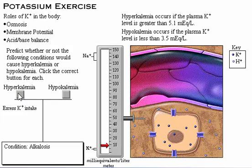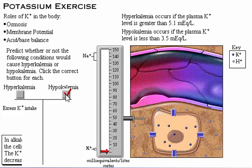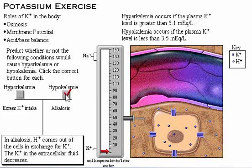In alkalosis, hydrogen ion comes out of the cells in exchange for potassium ion. The potassium ion in the extracellular fluid decreases, leading to hypokalemia.